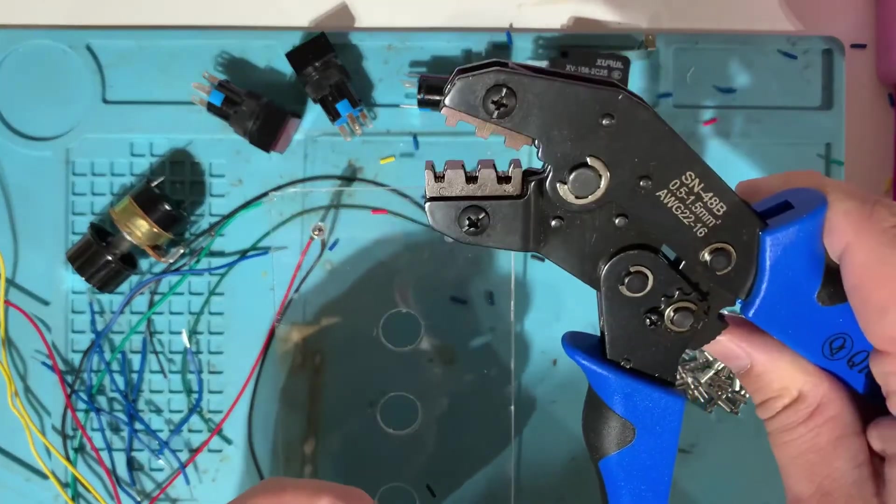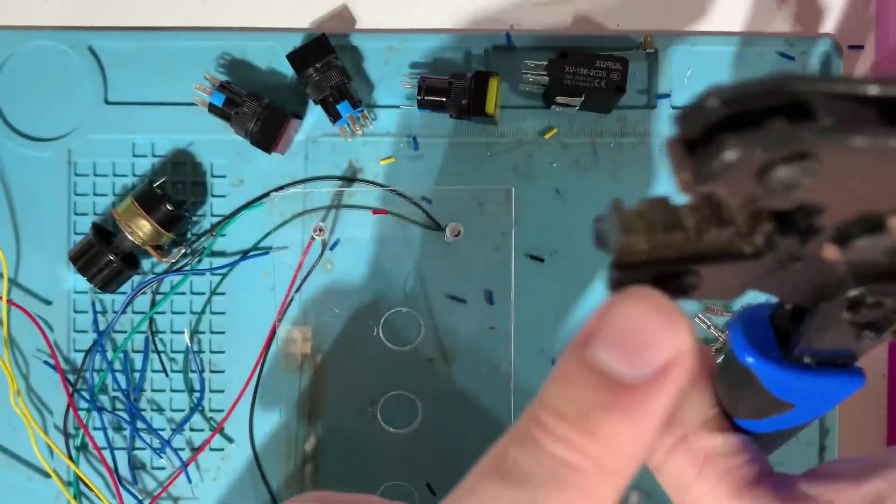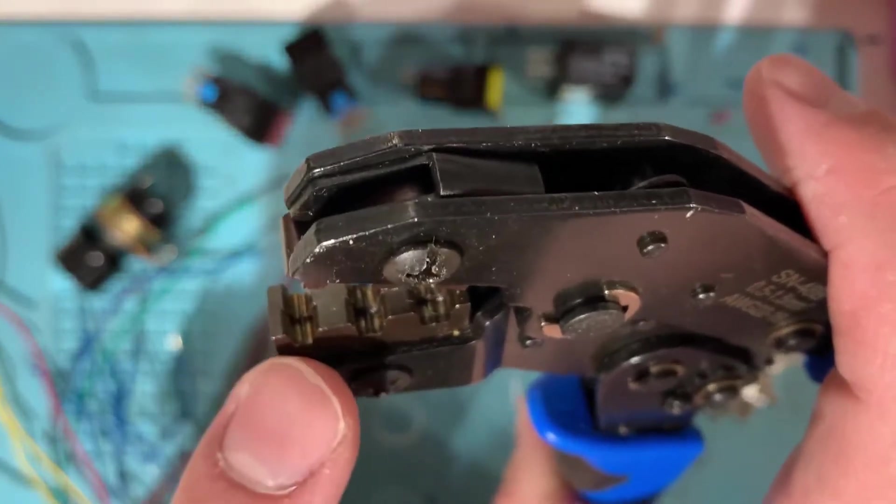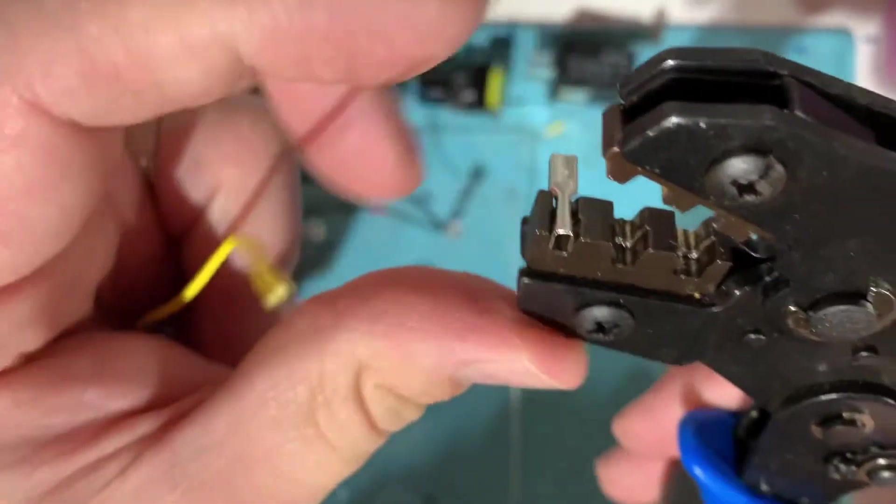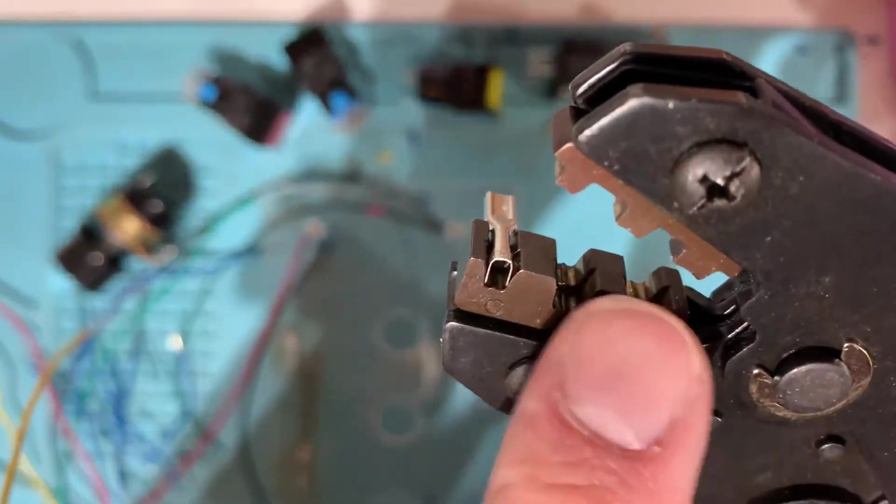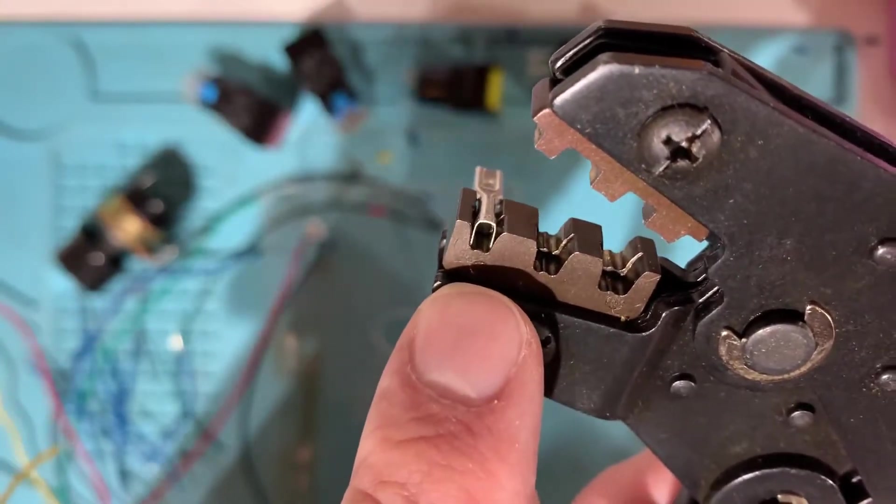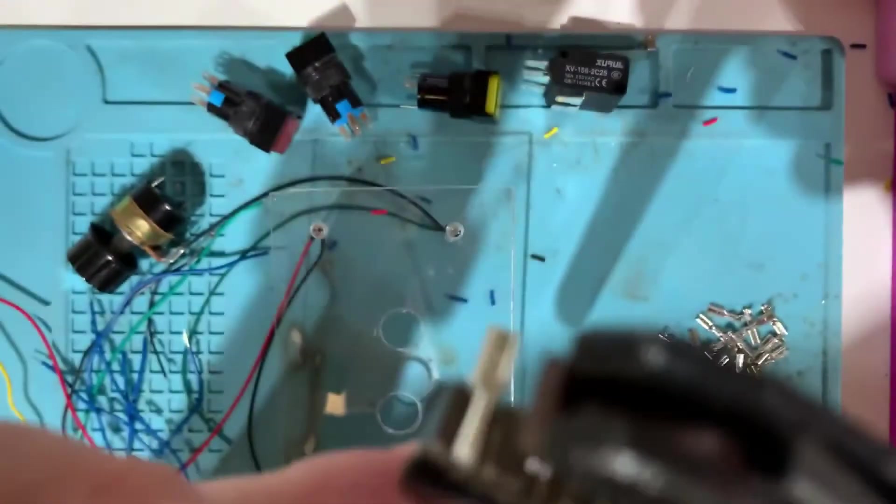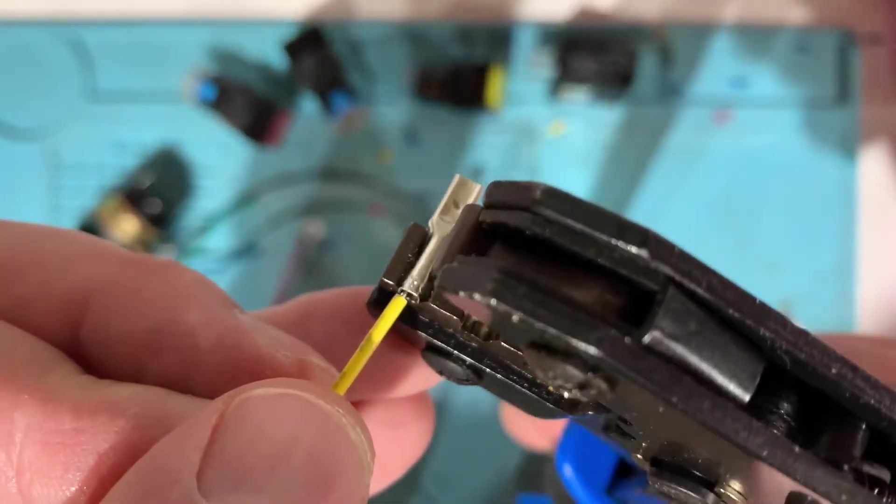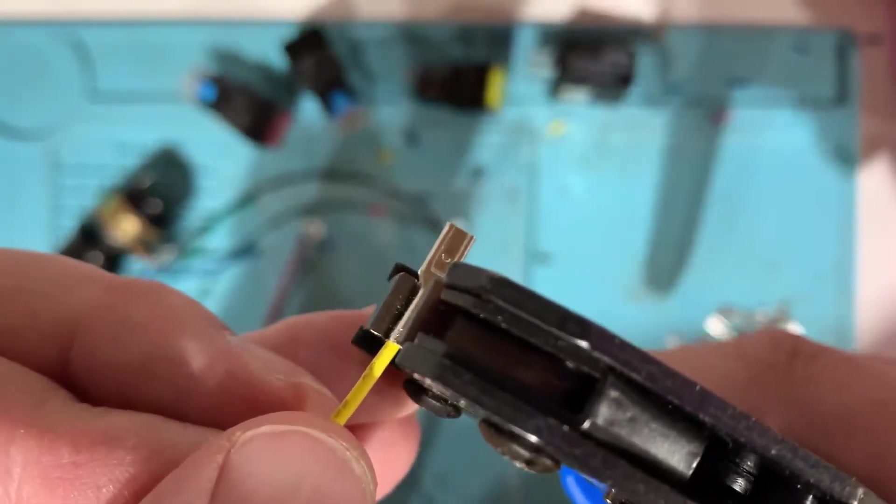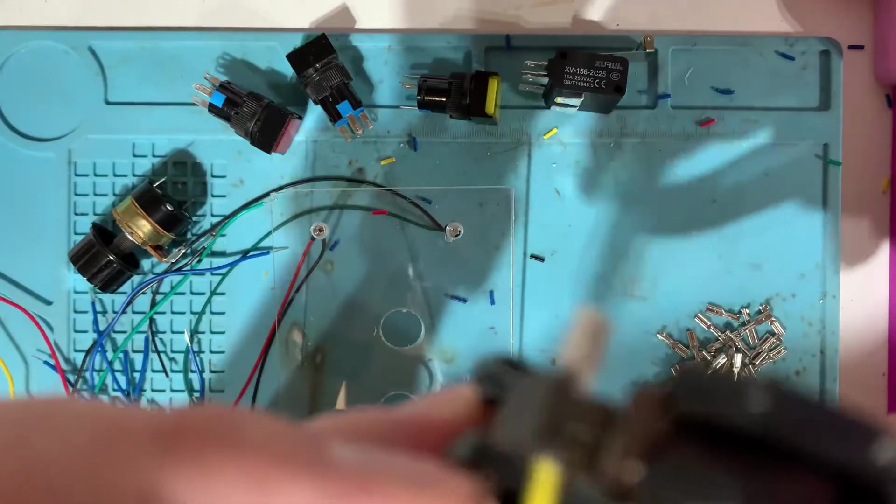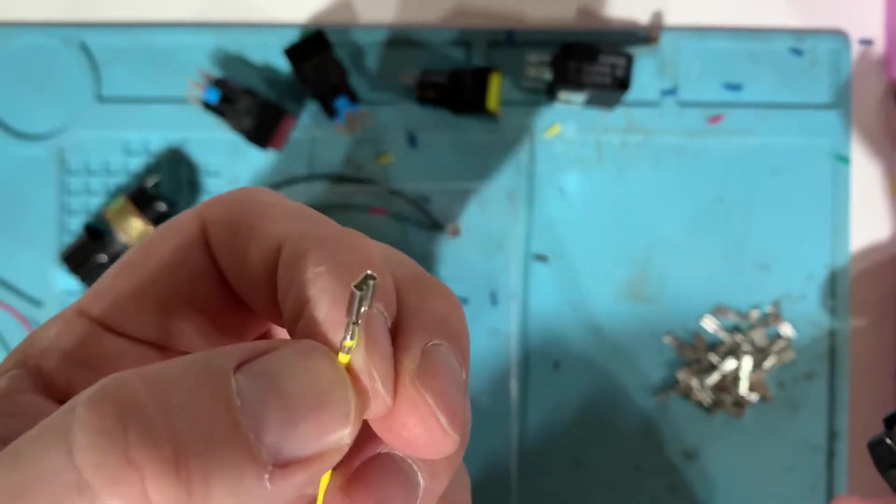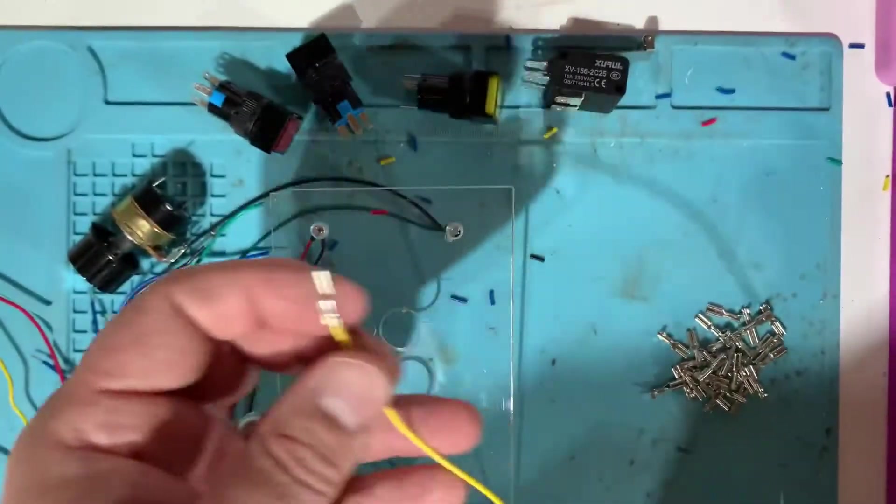In order to get these on, you're gonna need one of these crimpers, and I'll have a link below. If you look, there's a little jaw that's slotted. So you load this in face down with the opening at the bottom of the jaw and slide your wire in just past where the sheathing is on it, and then squeeze. And now I can plug this end in.